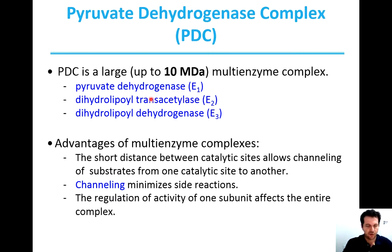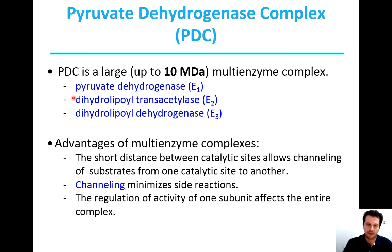The pyruvate dehydrogenase complex is a very big complex — up to 10 MDaltons. It is composed of three subunits: pyruvate dehydrogenase E1, E2, and E3.